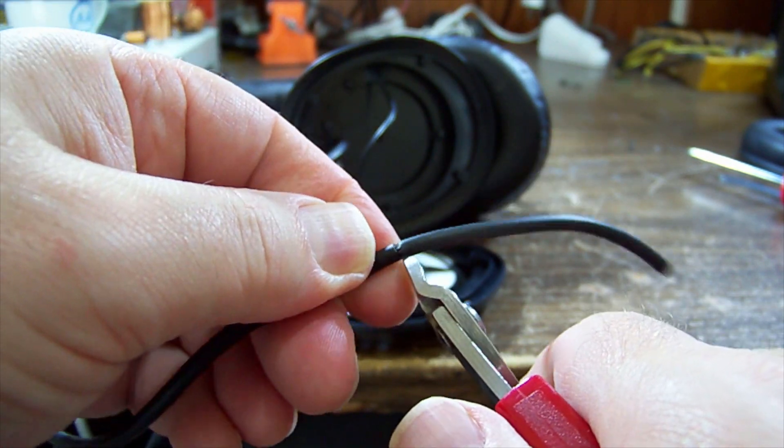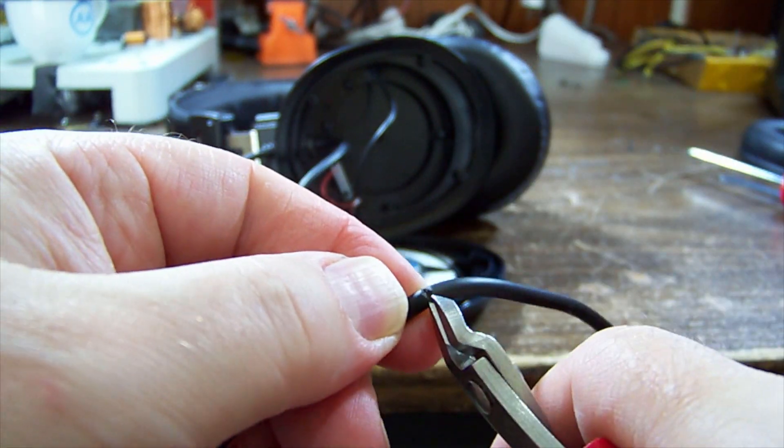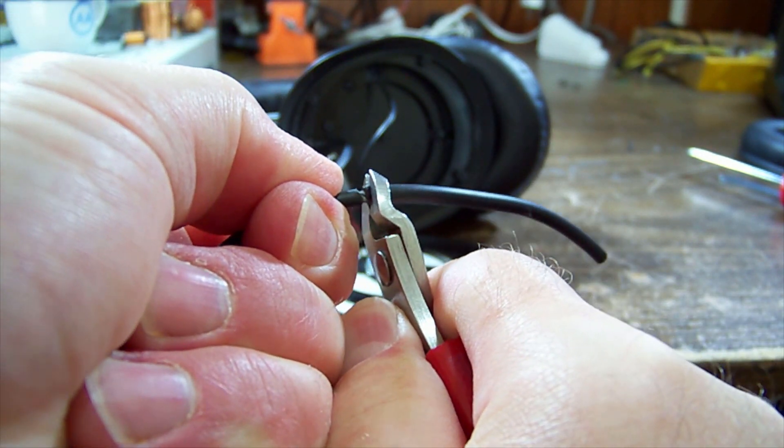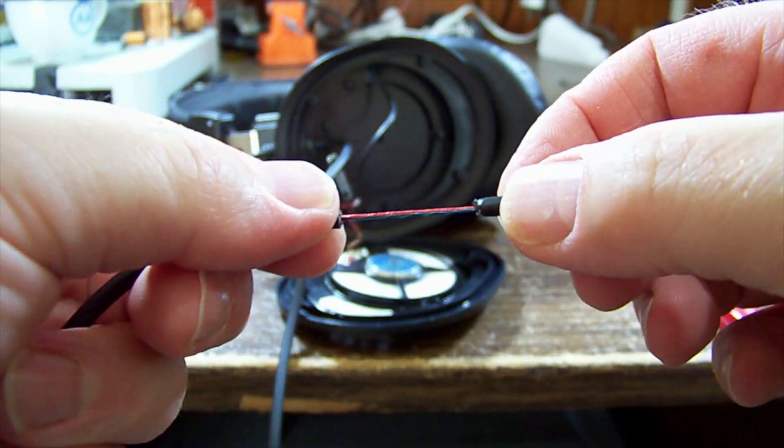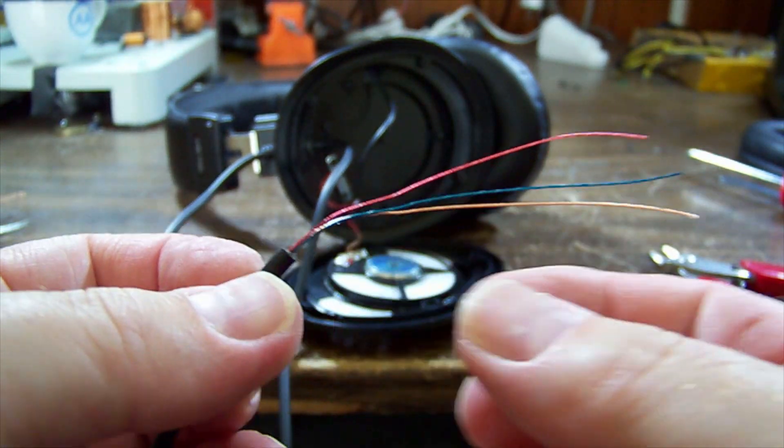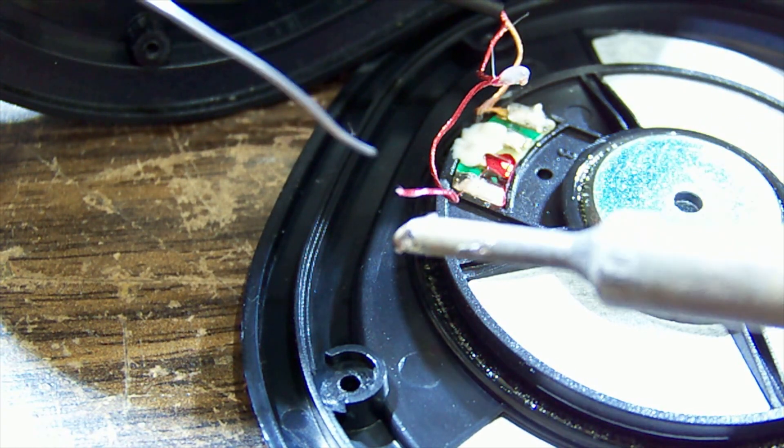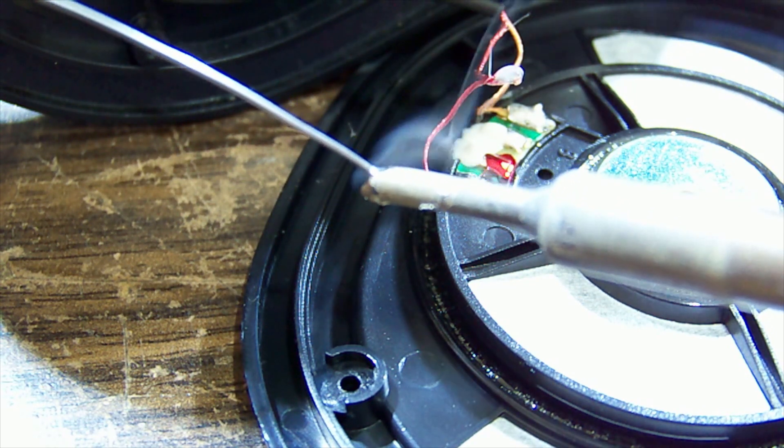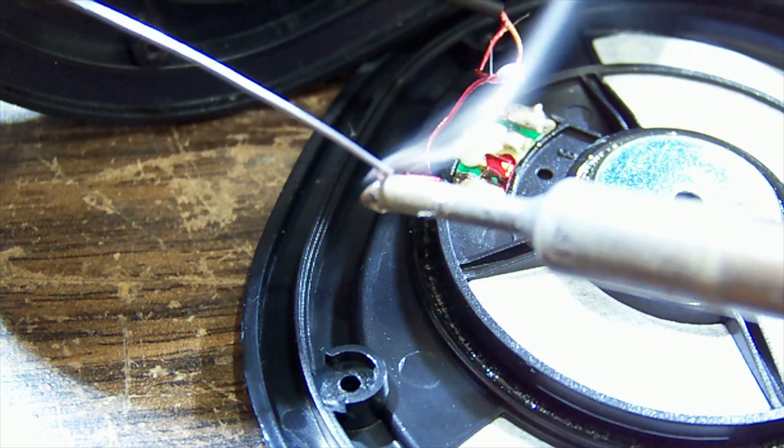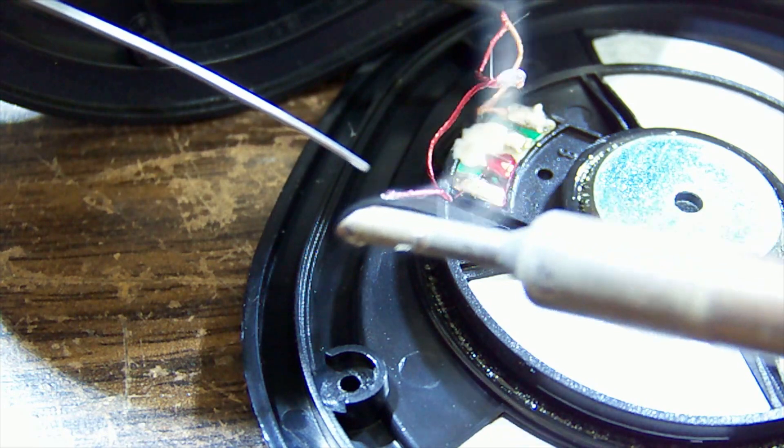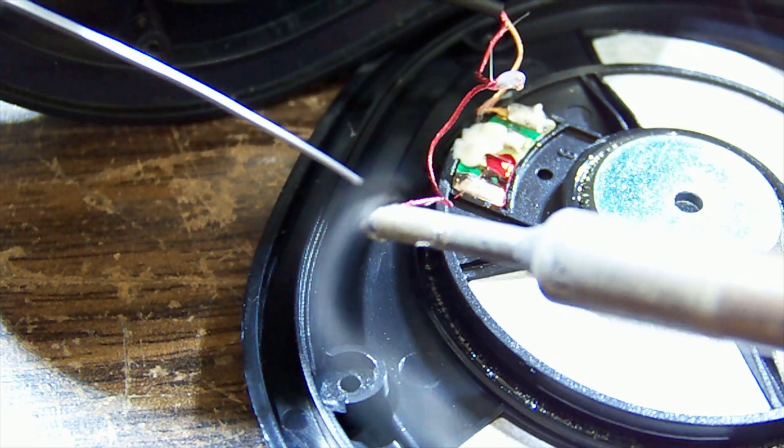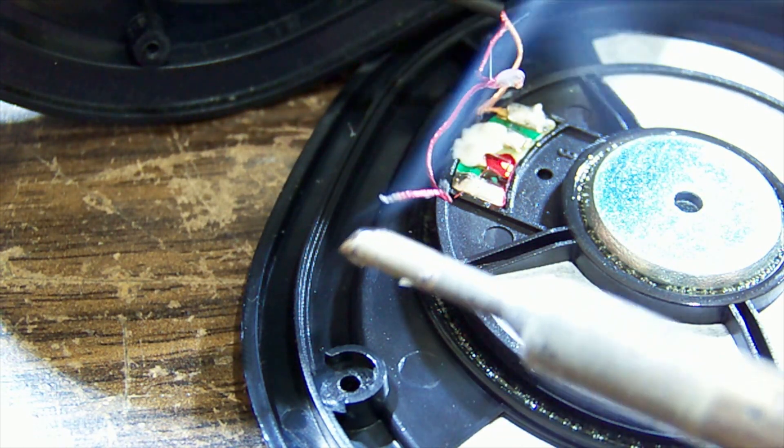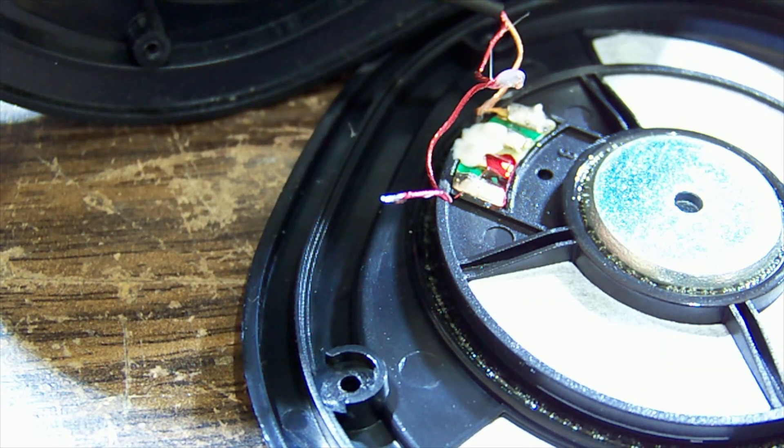And I'll just nip my way around the insulation. It's quite thick insulation really. The strands up the middle are very fine. There we go. Tin the end of the red wire. Because the insulation on it needs to be melted off.